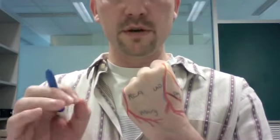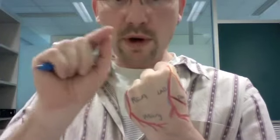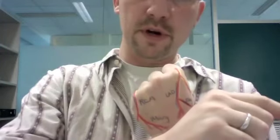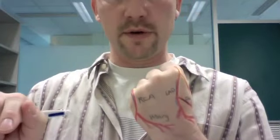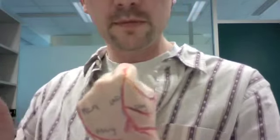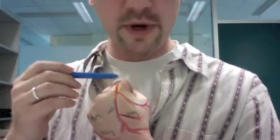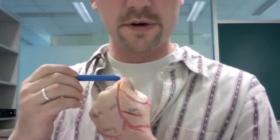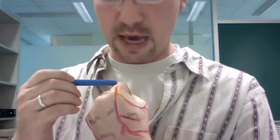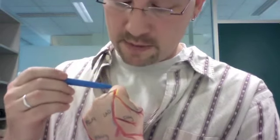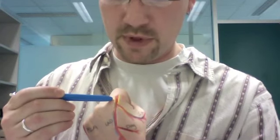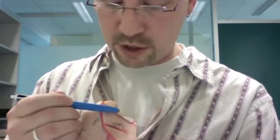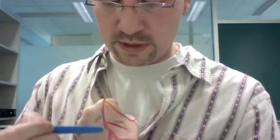Both of these arteries arise from the aorta from their own holes. There's one hole in the aorta that the left coronary artery comes out of, and there's one hole in the aorta that the right coronary artery comes out of. The LCA comes down and for a short period it's just its own straight little artery with no branches, and then it does this major branch into two different arteries.